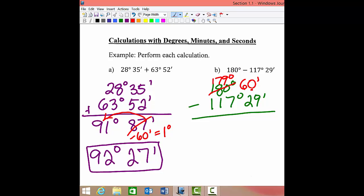That way we can do the subtraction. 60 minutes minus 29 minutes, that would be 31 minutes, and then 179 minus 117, that would be 62 degrees.